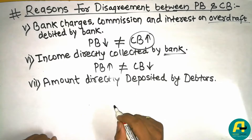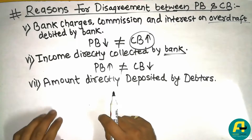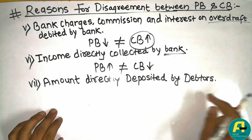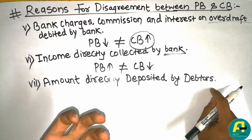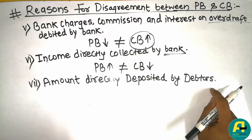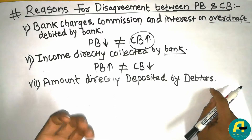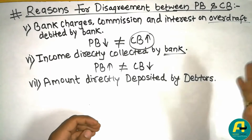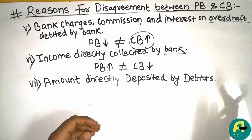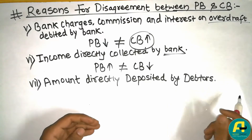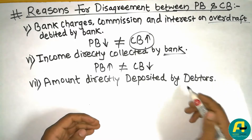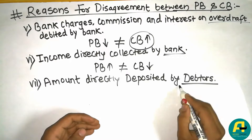Another reason is amount directly deposited by debtors. Debtors are those who owe money to the organization and they may deposit the amount directly into the bank account, which increases the pass book balance but is not yet recorded in the cash book.